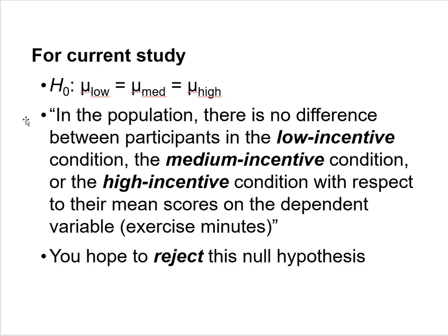As is usually the case when we test a null hypothesis, we hope to be able to reject it. If we can reject it, it's one piece of the puzzle showing that our independent variable is useful — that it may have some kind of effect on participant behavior.